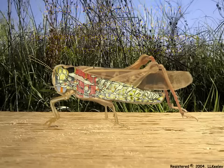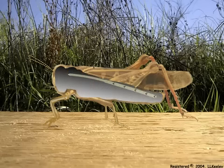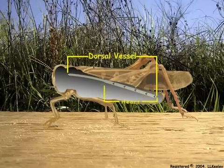Insects have a simple, open circulatory system. The circulatory system consists of a dorsal vessel running the length of the body. The dorsal vessel is divided into a posterior heart that contains intake valves called ostia, and an anterior aorta.